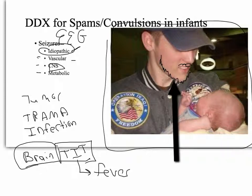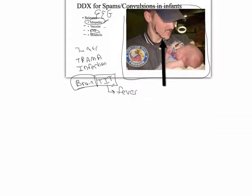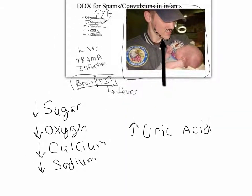Within metabolic causes, you've got four things that could be low and one that could be high. Low sugar — hypoglycemia; low oxygen — hypoxemia; hypocalcemia; hyponatremia; or uremia and ammonia on the high side. This is not the end-all be-all list. In review, if we have a positive EEG, we look at the brain, the vessels, and the metabolism. If we can rule out those three things, we'll probably lean towards idiopathic.